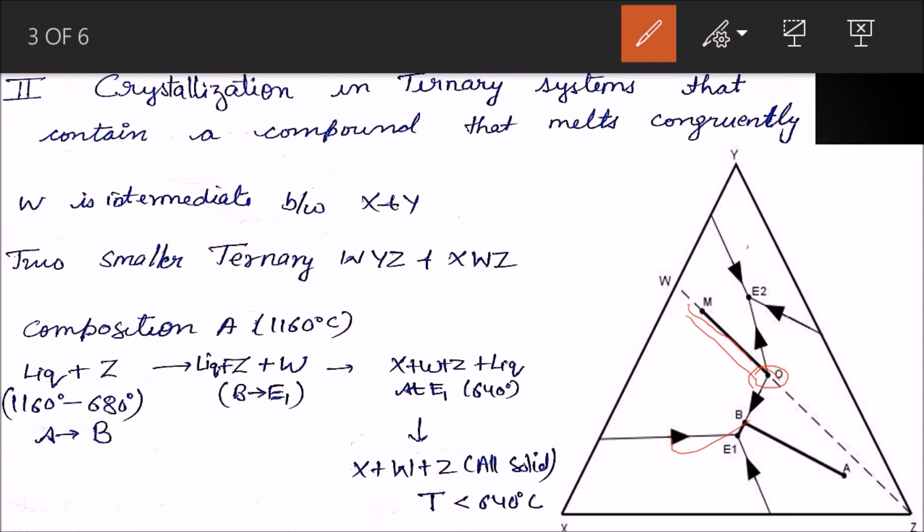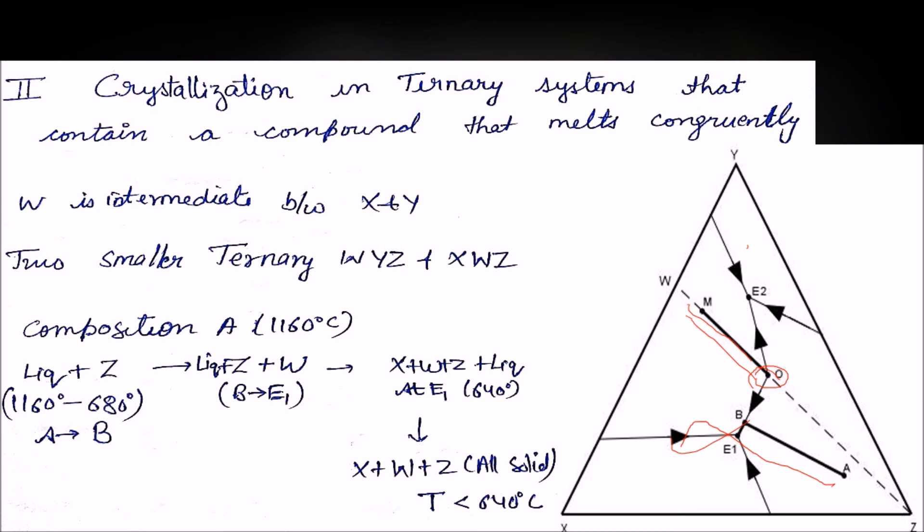You don't have to be scared of these diagrams. They're fairly easy. You just have to know in which direction the crystallization will move. This is a piece of cake. In the next video, we will see another form of ternary system in which a compound will melt incongruently, similar to the peritectic system where there was incongruent melting between forsterite and enstatite.